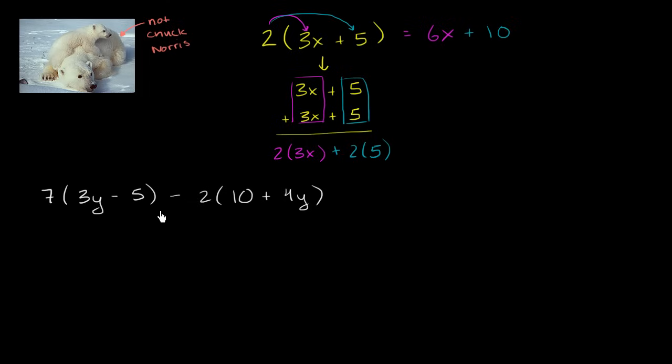Well, let's work on the left-hand side of the expression, the 7 times 3y minus 5. We just have to distribute the 7. So this is going to be 7 times 3y, which is going to give us 21y. Or if I had 3y's 7 times, it's going to be 21y's.